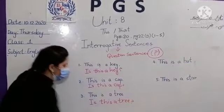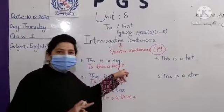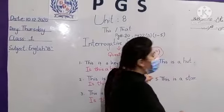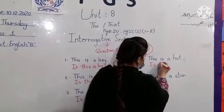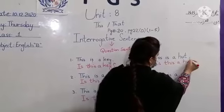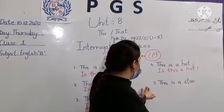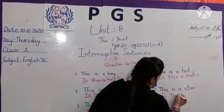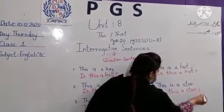An important point about interrogative sentences is that a question mark comes at the end. Next: 'This is a fight' — 'Is this a heart?' — again with a question mark. Next: 'This is a star.' How will it change? 'Is this a star?' — and again, question mark.